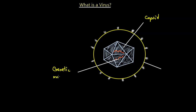Genetic material can be in the form of RNA or DNA — single-stranded RNA, double-stranded RNA, single-stranded DNA, or double-stranded DNA. So it could be all kinds of different genetic material encoded inside this capsid.